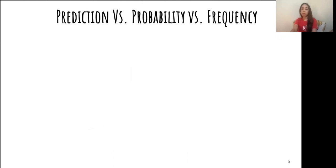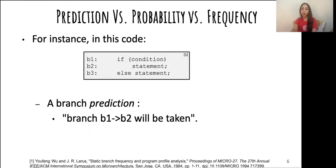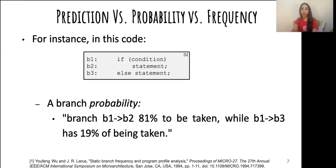Another important thing to keep in mind is the difference between branch prediction, probability, and frequency. A branch prediction is a yes or no answer for the direction of the branch. For instance, looking at the snippet of code, the branch prediction algorithm might say branch b1 to b2 will be taken. A branch probability is an estimate of how likely a branch is to be taken. In this case, an estimate might predict that branch b1 to b2 has an 81% probability of being taken, while b1 to b3 has 19%.